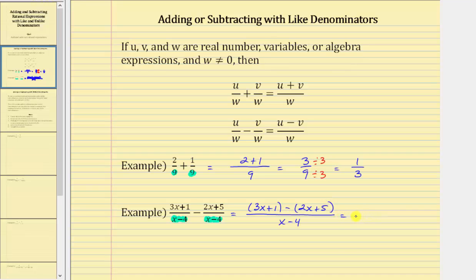Now we simplify the numerator. We have the quantity three x plus one, and then minus the quantity two x plus five. We need to subtract both terms inside the parentheses, so we have minus two x and then minus five. We can also think of distributing a negative one to clear the parentheses. Combining like terms, three x minus two x is x, and one minus five is negative four, giving us minus four.